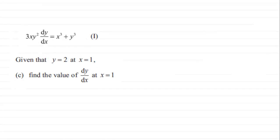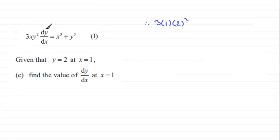So therefore we have 3 times x, which is 1, multiplied by y squared, which is 2 squared, and we've got dy by dx which we're finding when x is 1. We know that dy by dx equals x cubed plus y cubed, so that's going to be 1 cubed plus 2 cubed.